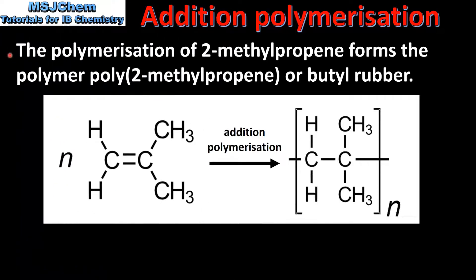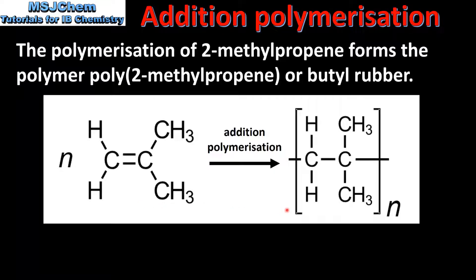Finally, we look at the polymerization of 2-methylpropene, which forms the polymer poly-2-methylpropene, otherwise known as butyl rubber. Once again we have the reaction of N number of molecules of 2-methylpropene to produce the polymer poly-2-methylpropene. And here we have the repeating unit of the polymer.